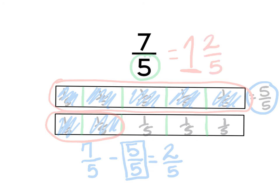So 7 fifths is the same as or it's equivalent to 1 and 2 fifths. Thank you.